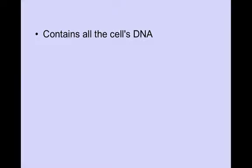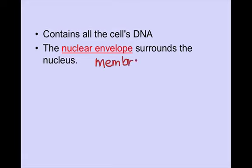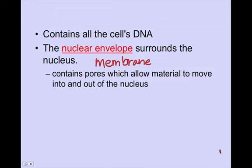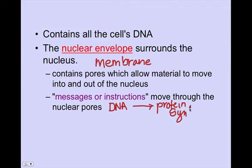The nucleus contains all of the cell's DNA — deoxyribonucleic acid — which is the genetic material. That's where all the hereditary portion of your cell is controlled. The nuclear envelope, sometimes called the nuclear membrane, surrounds the nucleus. It contains pores which allow materials to move into and out of the nucleus. What's moving through those pores are messengers or instructions — basically moving instructions from the DNA out to the cell for protein synthesis to occur, which we'll discuss in a future chapter.